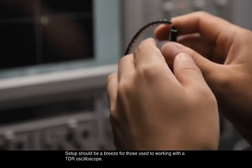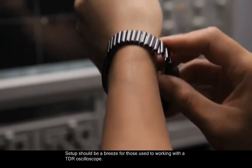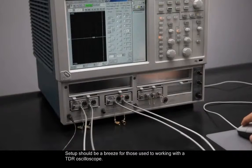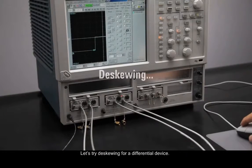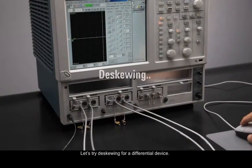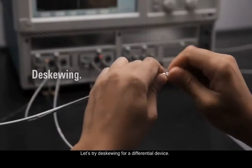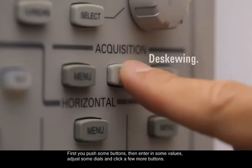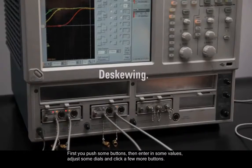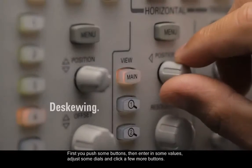Setup should be a breeze for those used to working with a TDR oscilloscope. Let's try diskewing for a differential device. First you push some buttons, then enter in some values, adjust some dials, and click a few more buttons.